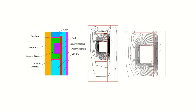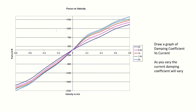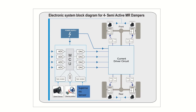The force-versus-velocity characteristics for different current values show that at any operating point, the damping coefficient can be determined. By varying current, the MR damper can be made very hard or soft. MR fluid dampers can be connected to all four wheels — front and rear — of a vehicle.